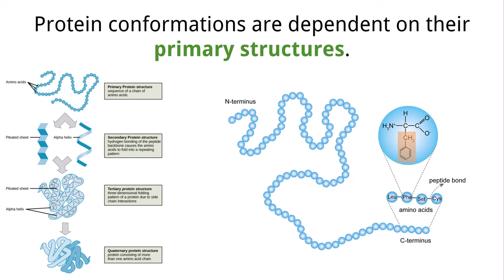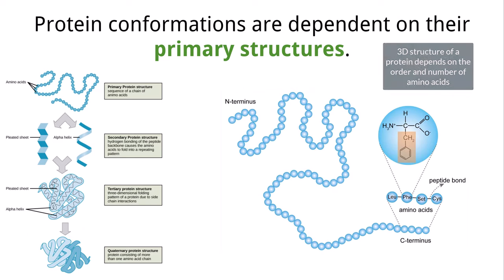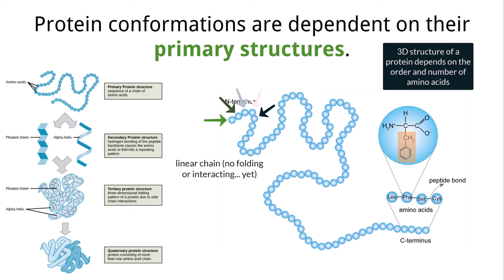The specific three-dimensional structure of a protein is based on the order and number of amino acids it has in its chain. When an amino acid chain is being built, each amino acid is added one at a time until the process is done. This early version of the chain, when amino acids simply exist in a straight line, is called its primary structure.